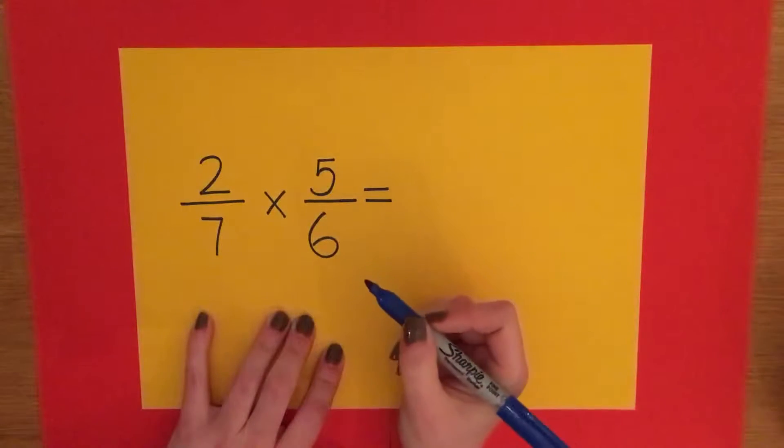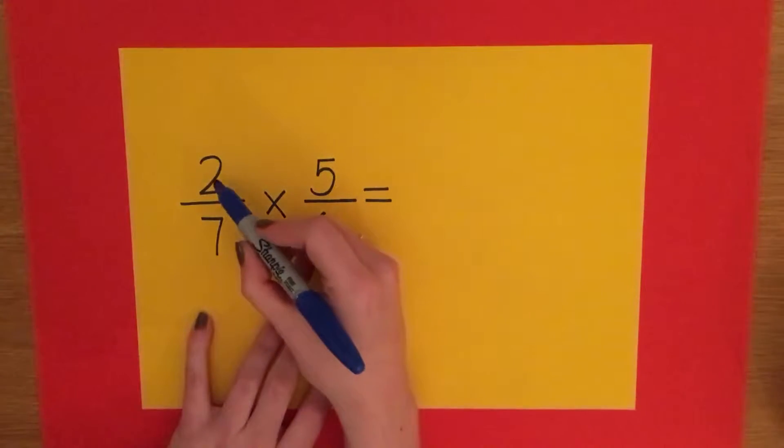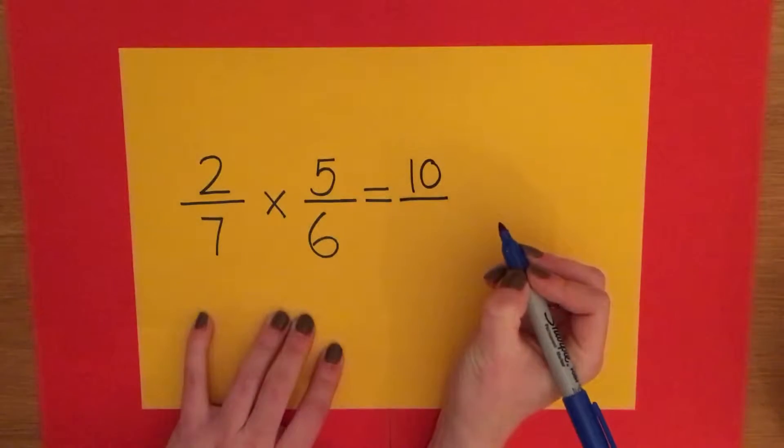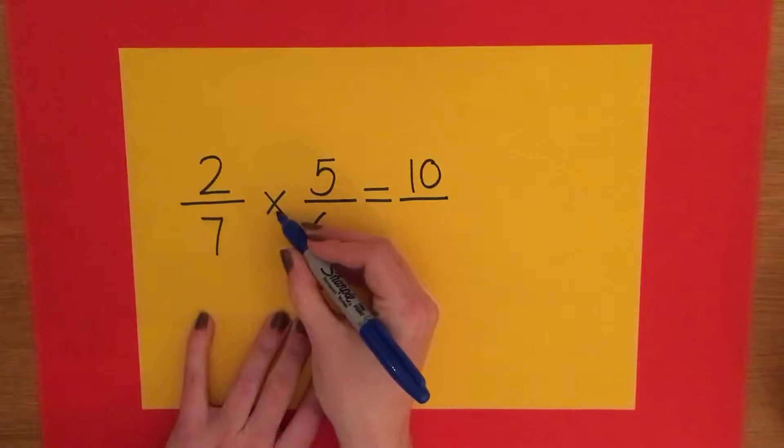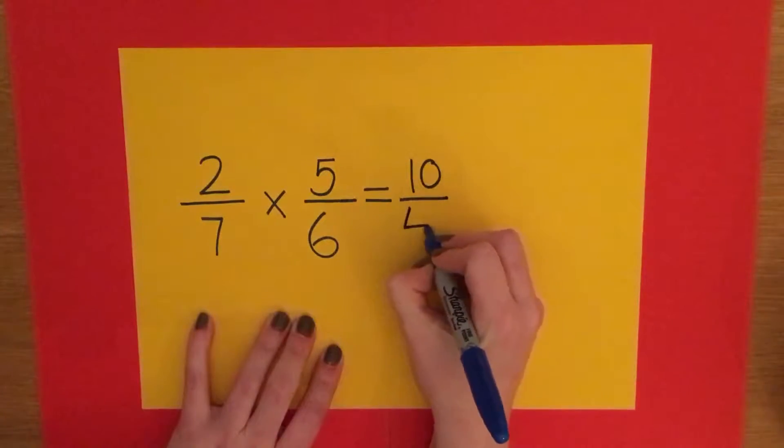Let's look at that rhyme closely. Multiplying fractions, no big problem. Top times top, 2 times 5, which makes 10. Over bottom times bottom. 7 times 6 is 42.